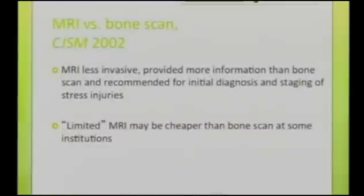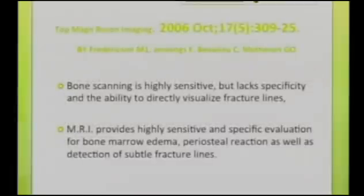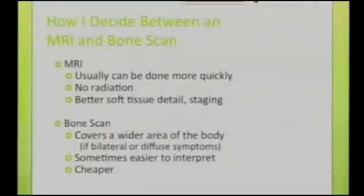Comparing MRI and bone scan at the institution level, MRI is less expensive in some institutions and easier to access. MRI provides more information than a bone scan and is recommended for initial diagnosis and staging of stress injuries. Bone scanning is highly sensitive but lacks specificity and the ability to directly visualize fracture lines. MRI provides highly sensitive and specific evaluation of bone marrow edema, periosteal reaction, and detection of subtle fracture lines. MRI is better — it can be done more quickly, involves no radiation, and gives better soft tissue detail and staging.